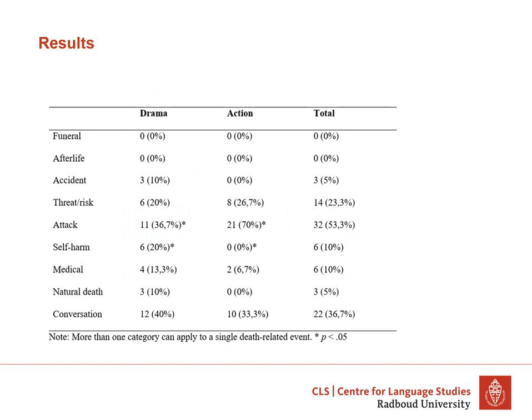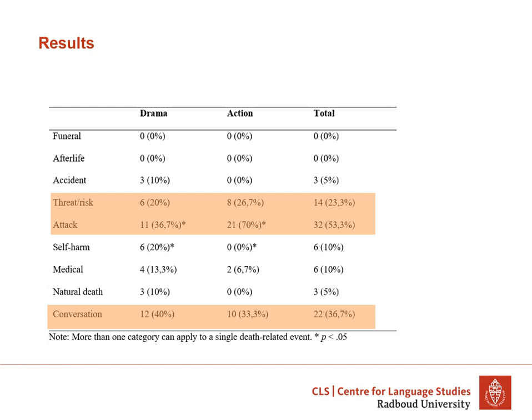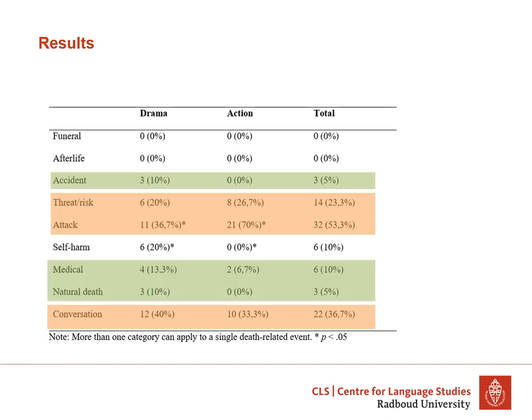Moving on to the type of death events, this table shows that most death-related events were actual deaths, followed by conversations about death, threats, or risks. Notably, there were no death-related events involving funerals. Medical deaths, accidents, natural deaths, and self-harm events were quite rare, and these only occurred in drama movies. This is notable because these are actually the most frequent types of death in real life — people tend to die from accidents or medical issues rather than violent attacks, but this is not something we often see when watching a character die in a movie.